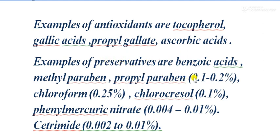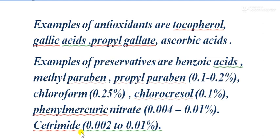Examples of preservatives are benzoic acid, methylparaben, and propylparaben — propylparaben should be 0.1 to 0.2 percent. Chloroform 0.25 percent, chlorocresol 0.1 percent, phenylmercuric nitrate 0.004 to 0.01 percent, and cetrimide 0.002 to 0.01 percent.